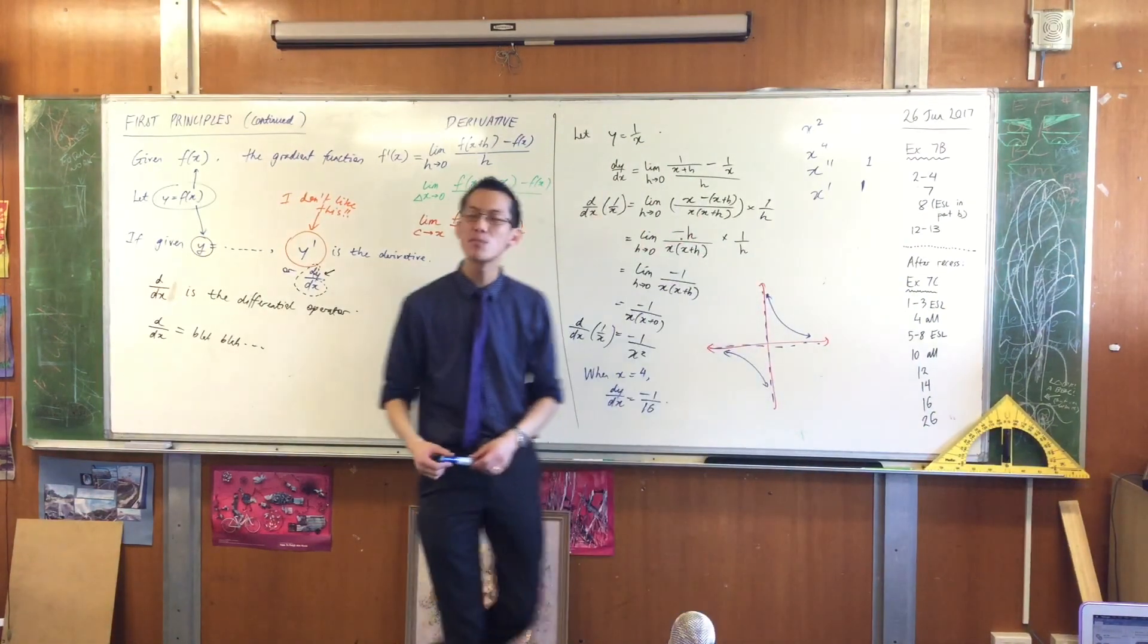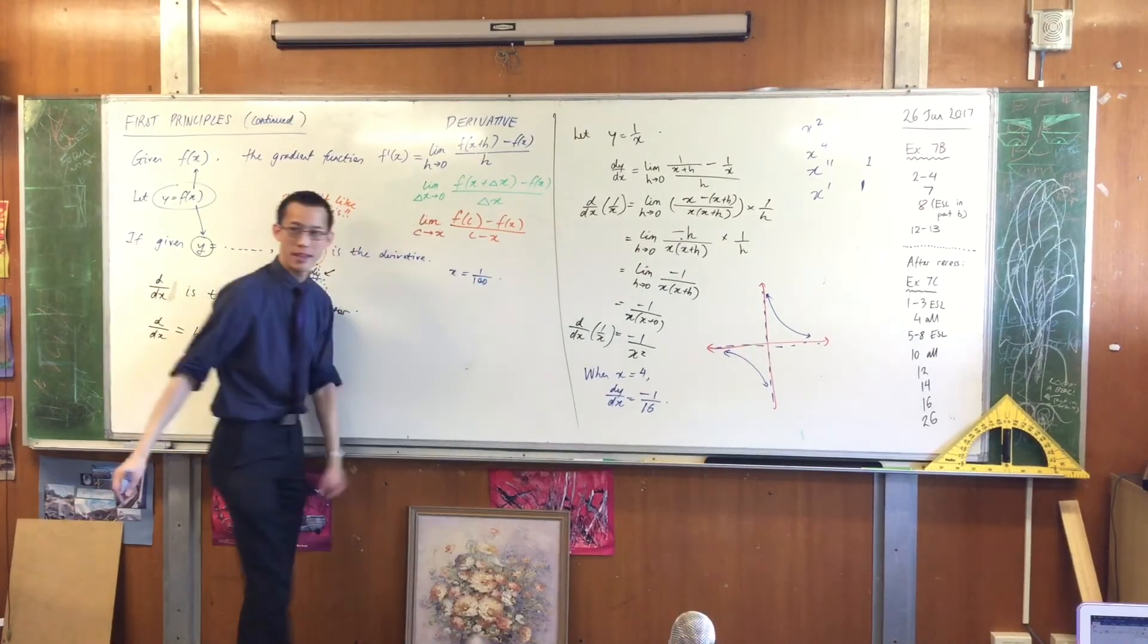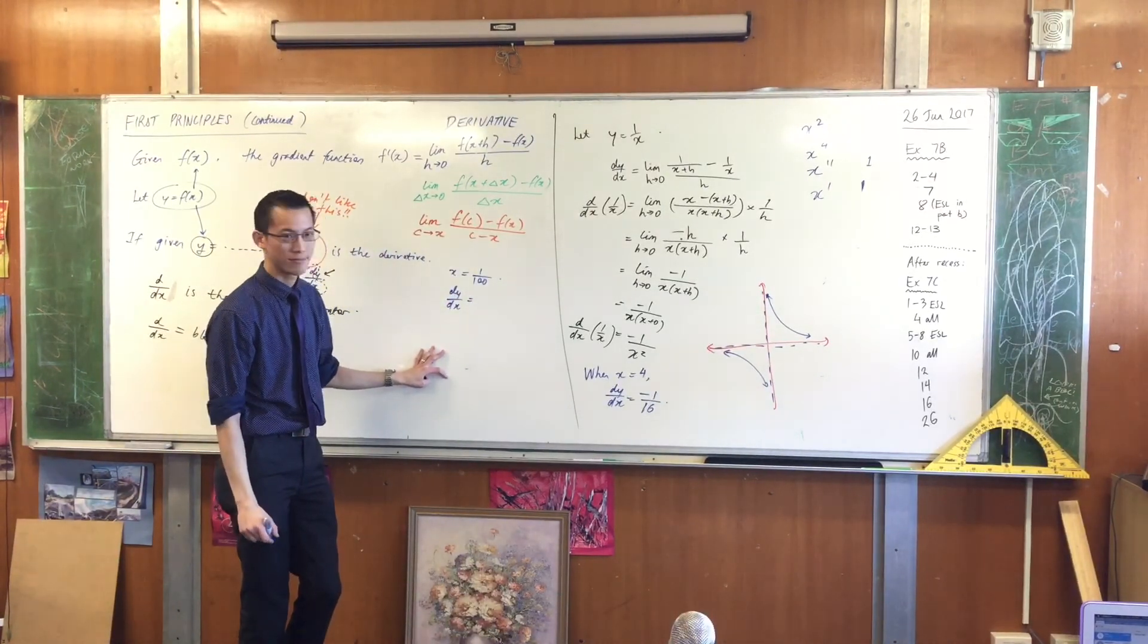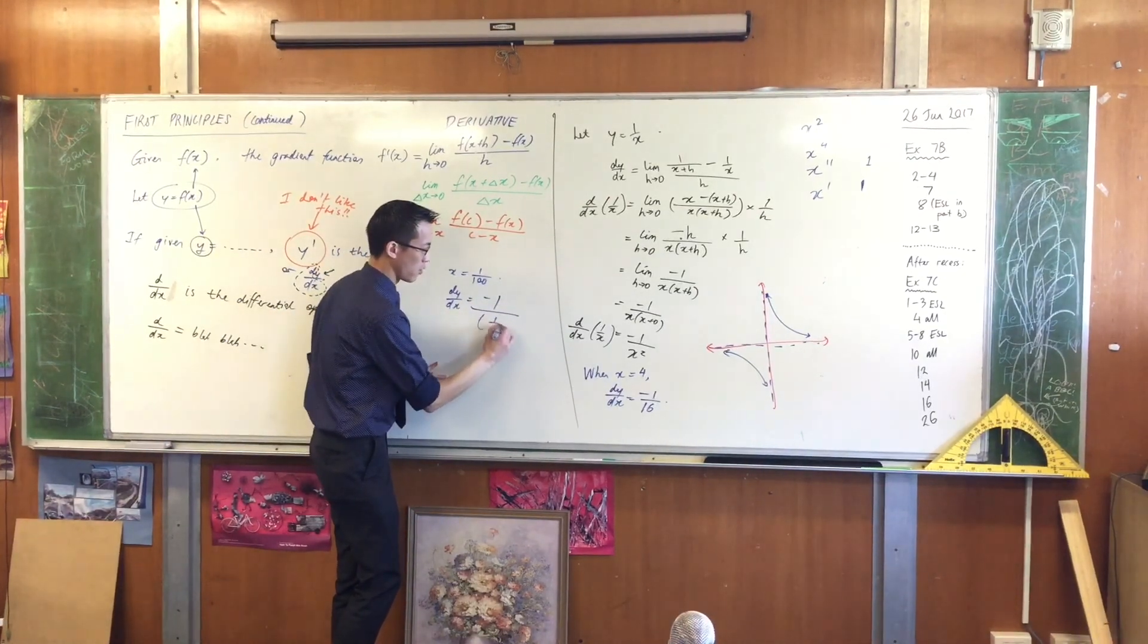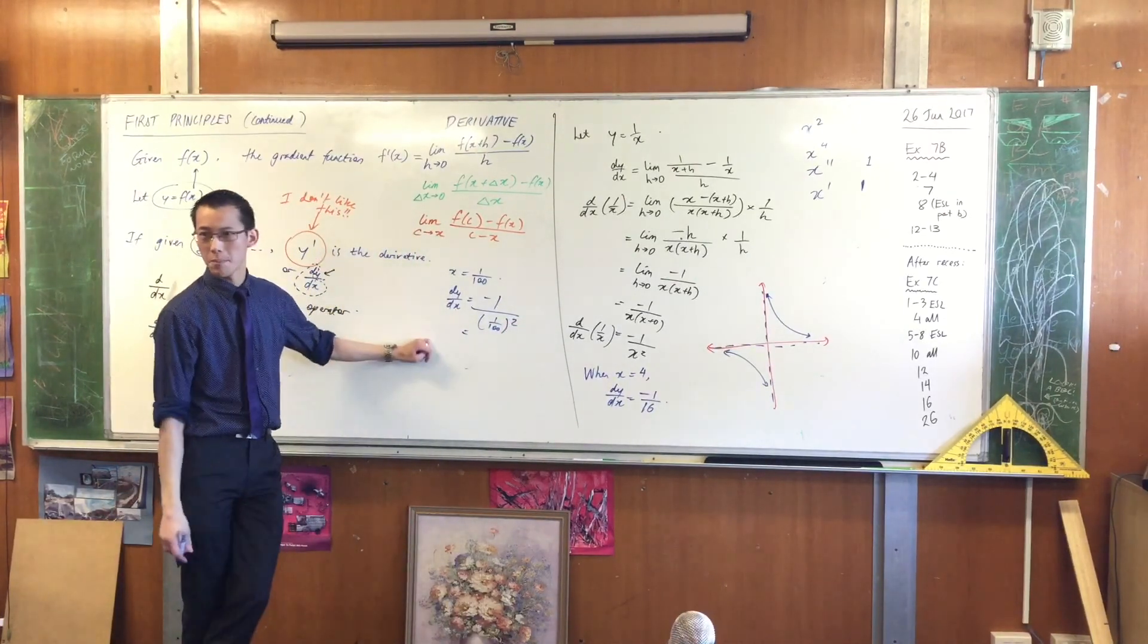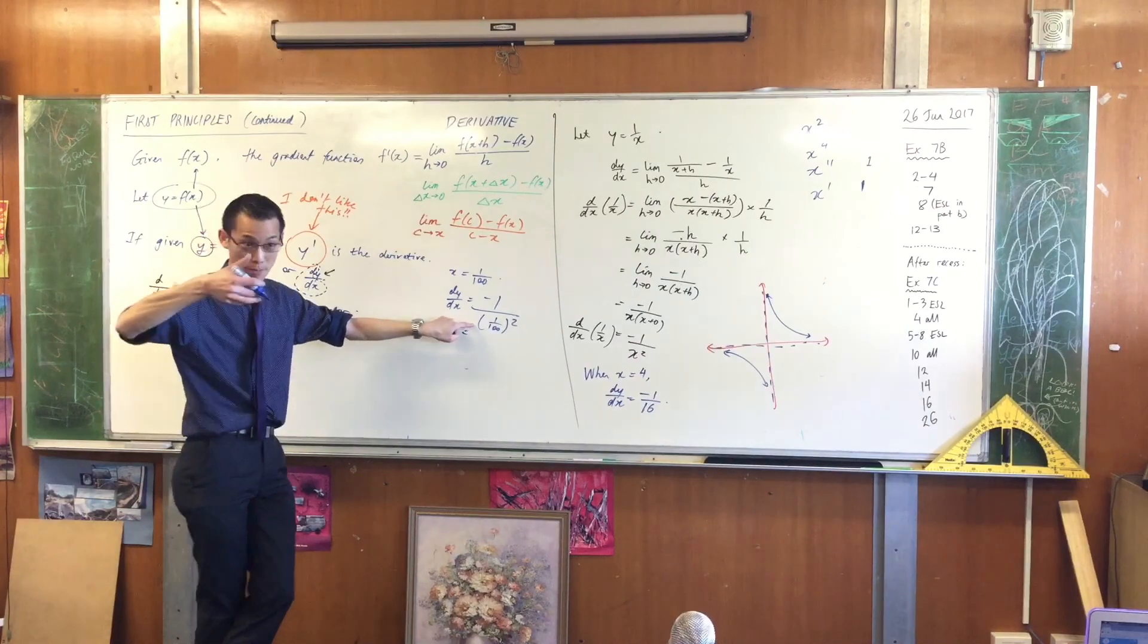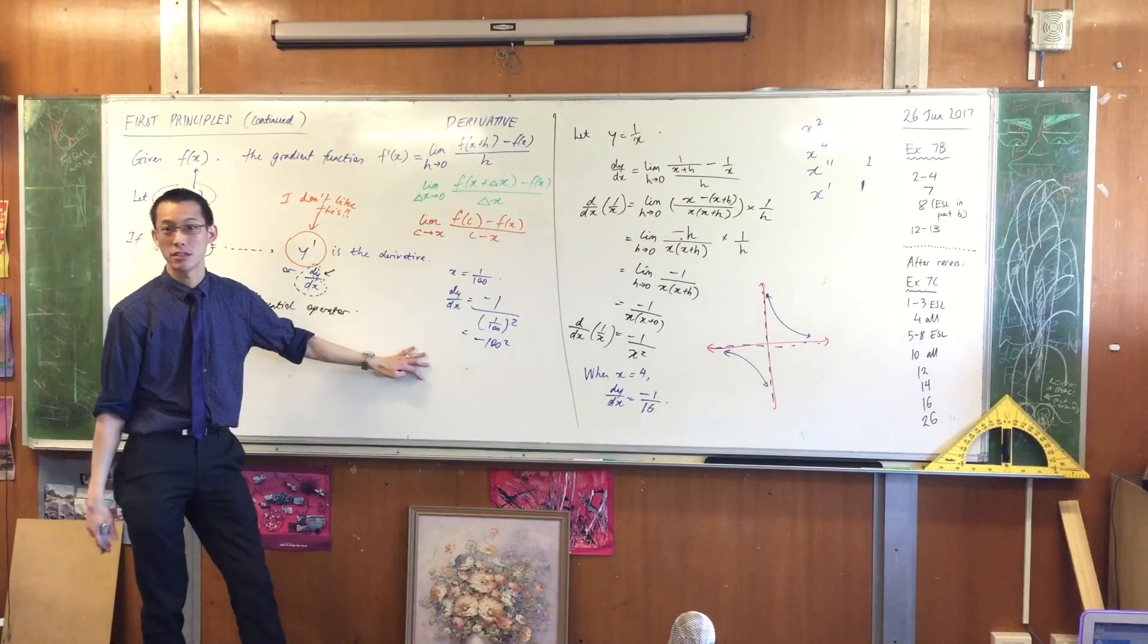What about a small value of x? Say x equals 1 over 100. In this case, what would the derivative be? Let's just evaluate this thing. You've got a minus 1 on the top, and then on the bottom, you've got 1 over 100 squared. What do I do with this? What does this mean? The negative is not going anywhere, but this is a fraction on a fraction. You're taking the reciprocal, so I'm pretty sure that's negative 100 squared. Negative 10,000.